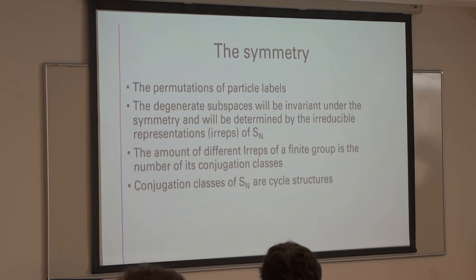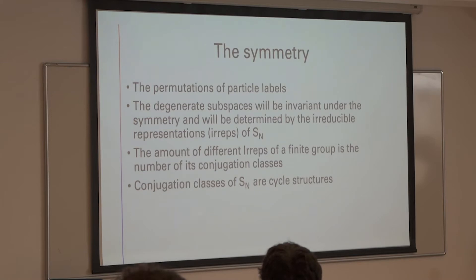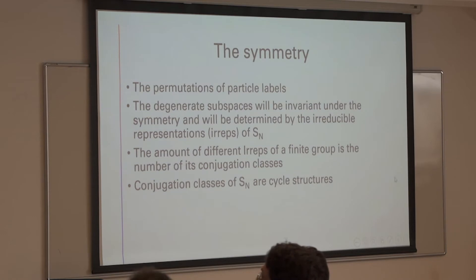To find the degeneracies we look at the symmetries in the problem. An obvious symmetry here is the permutation of particle labels — I can rename the particles and nothing measurable should change. So we are looking at the symmetry group S_N, the symmetry group of permutations, and we are looking for its irreducible representations.